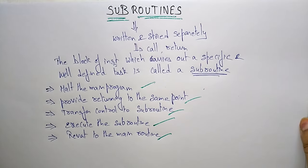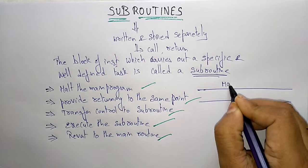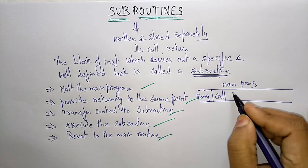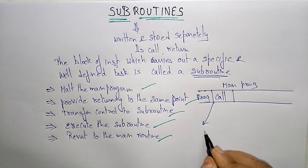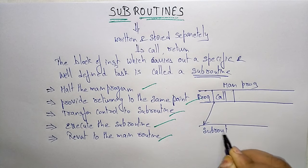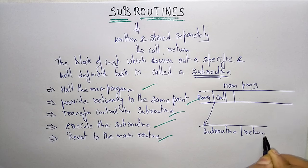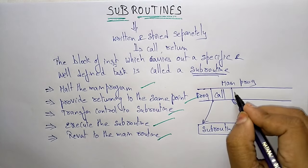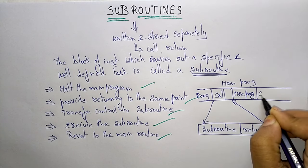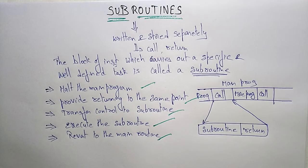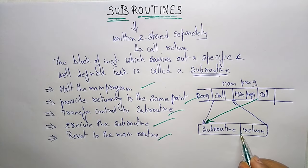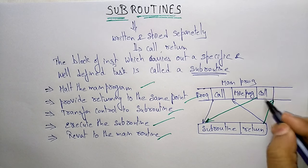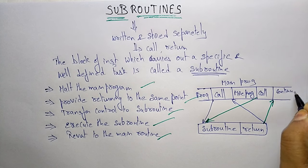Suppose this is the main program. The program is executing in sequence. Whenever a call occurs, it goes to the subroutine program. After the subroutine program is over — whenever it sees the return statement — it goes back to the main program. If there is still more of the main program to execute, we call the subprogram again. Whenever that occurs, it goes to the subroutine, executes that particular function, and after seeing the return, it again goes back to the main program and continues execution.